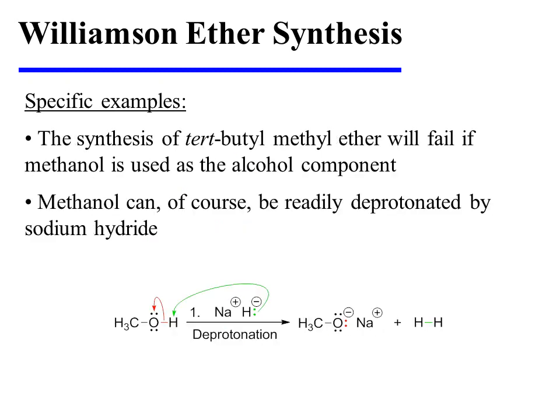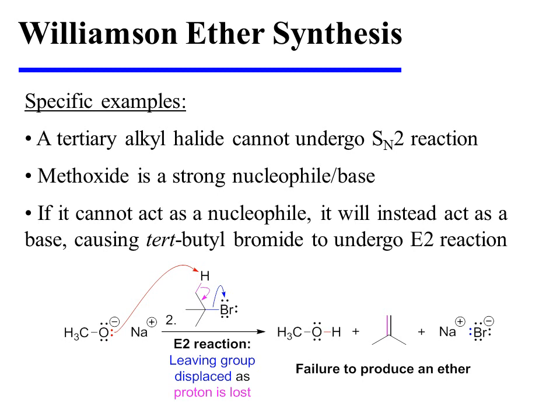On the other hand, had we selected methanol as the alcohol starting material, our synthesis would have failed. Methanol can, of course, be readily deprotonated by sodium hydride to afford methoxide. However, we would run into problems in the second step of the synthesis, as we would have no choice but to select tert-butyl bromide as the alkyl halide starting material. Tert-butyl bromide has an electrophilic carbon that is tertiary, and tertiary centers are not suitable for SN2 reaction — they are too sterically hindered to allow the approach of the strong nucleophile.